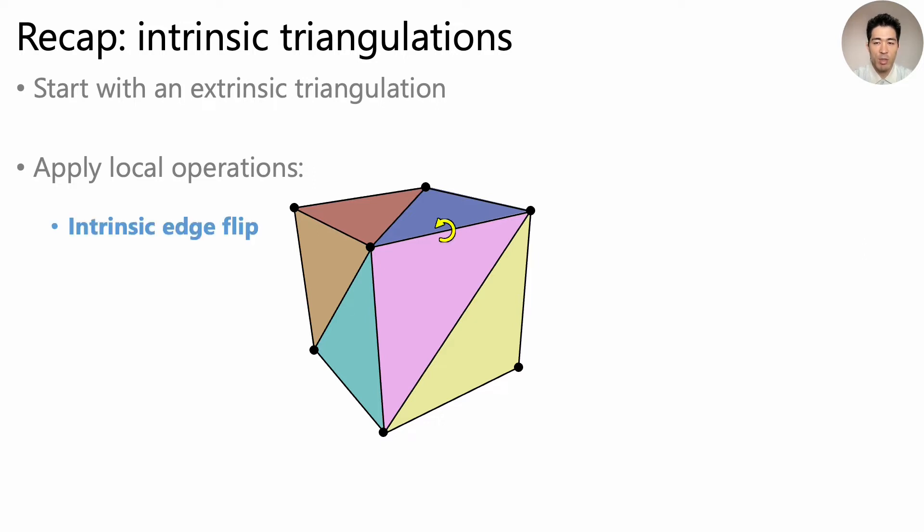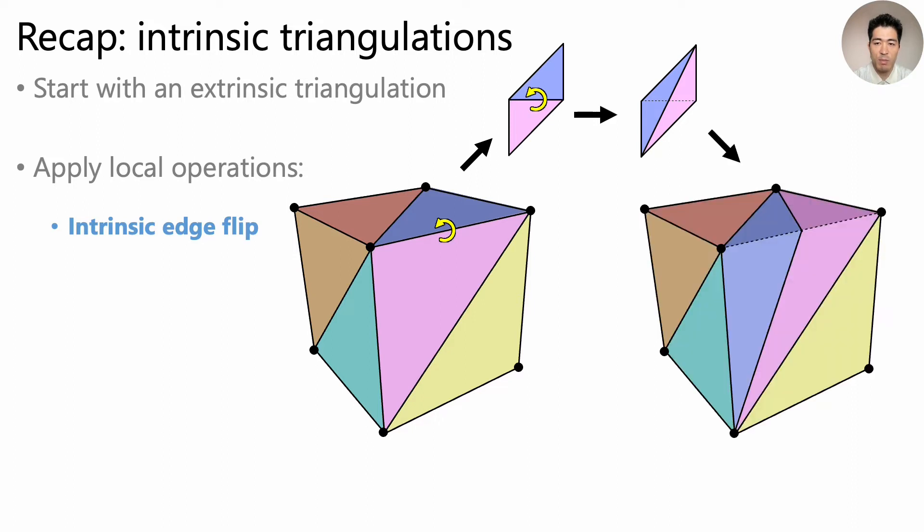The first basic operation is intrinsic edge flip. For example, if we are to flip this edge, we take its two adjacent triangles and flatten them to 2D. Then we flip the edge in 2D and obtain new triangle shapes. These triangles are then mapped back to the surface in 3D. They get bent across the edges of the original mesh, but we don't care as long as they can be flattened to 2D isometrically.